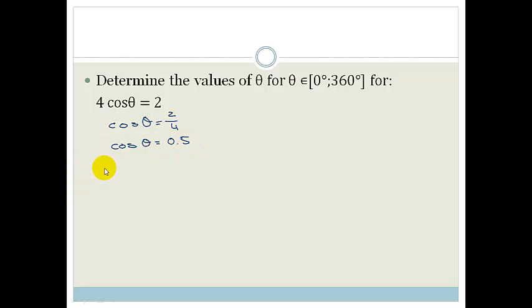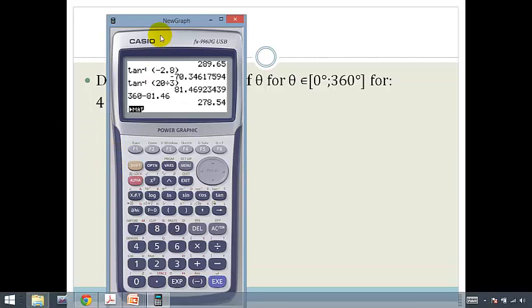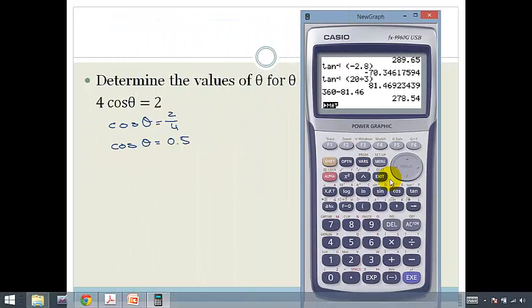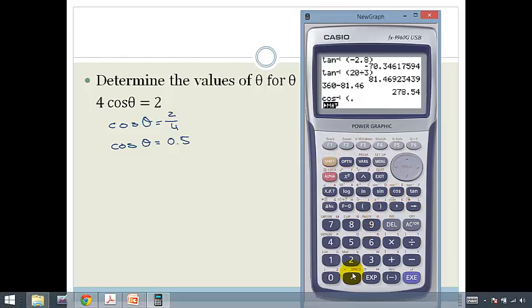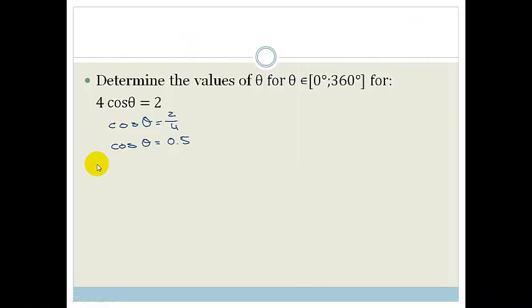So therefore, we're going to use our calculators. In order to get the angle from 0.5, we have to go second function cos, so we're going to go shift cos of bracket 0.5, close bracket, and it gives us 60 degrees. So therefore theta is equal to 60 degrees.